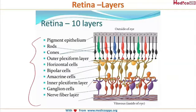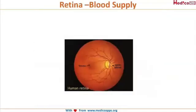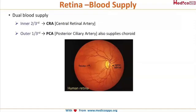Now let's look at the blood supply of the retina. The retina is a very crucial part of the eye, so it has a dual blood supply. The inner two-thirds is supplied by the central retinal artery, and the outer one-third is supplied by the posterior ciliary artery. The posterior ciliary artery also supplies the choroid.